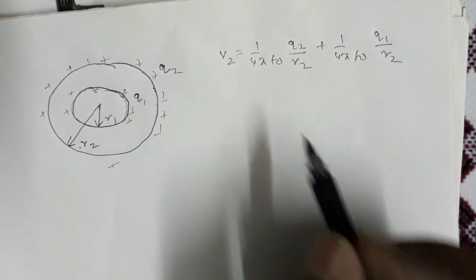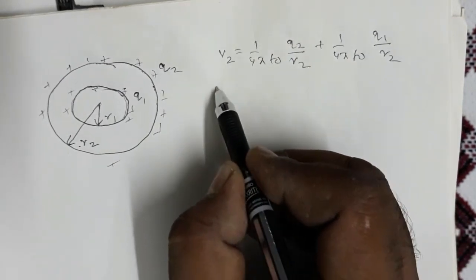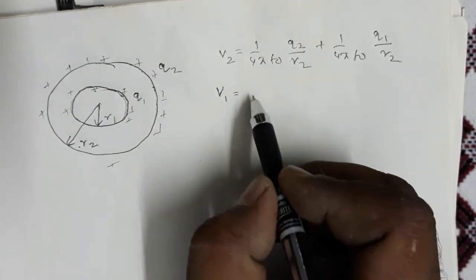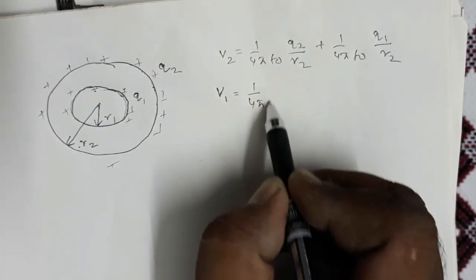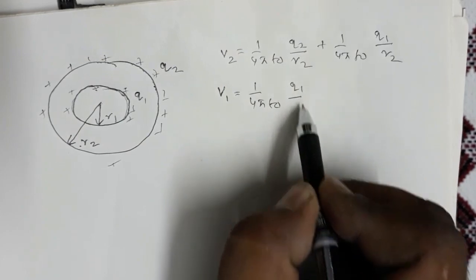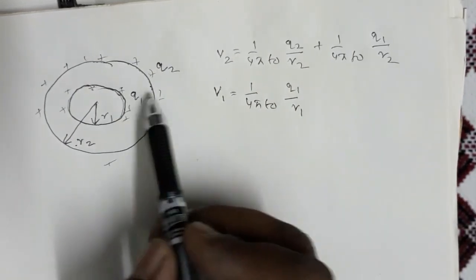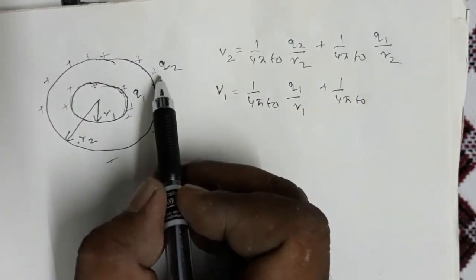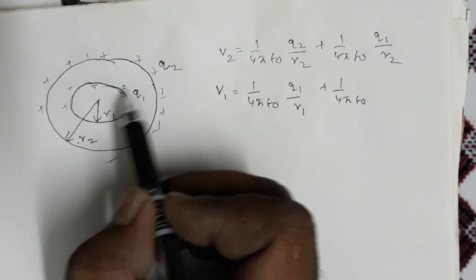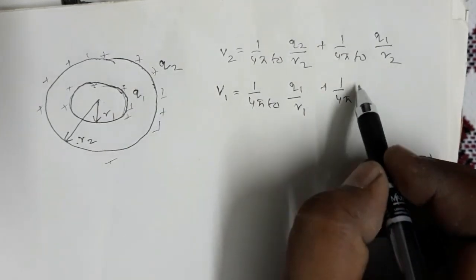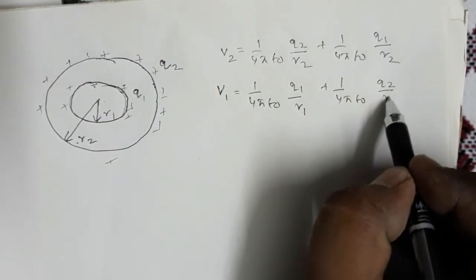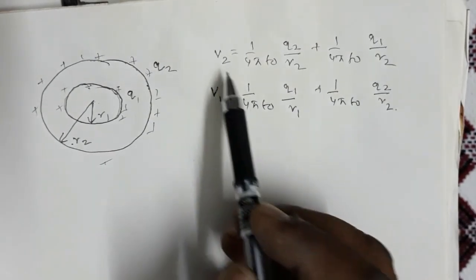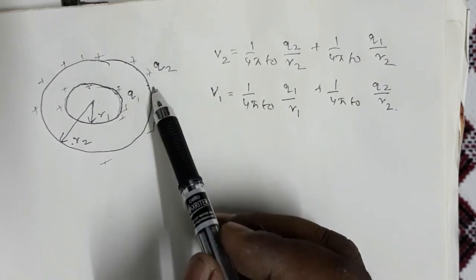Now for the potential on the surface of the inner shell, V1: the charge q1 contributes (1/4πε₀)(q1/r1). For the outer shell's charge q2, since the inner shell surface is inside the outer shell, the distance term is r2, giving (1/4πε₀)(q2/r2). So V1 = (1/4πε₀)(q1/r1 + q2/r2).